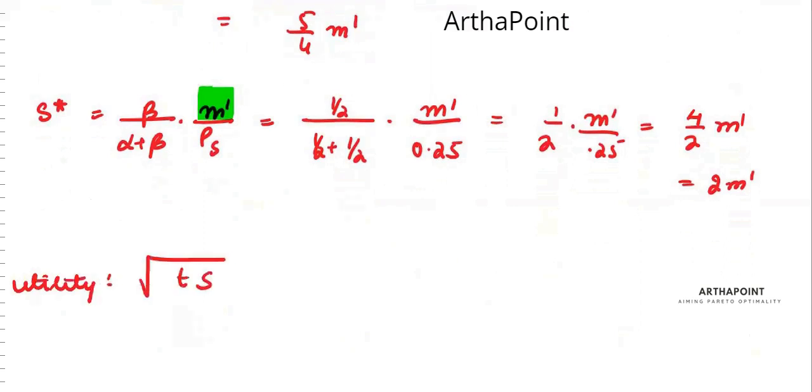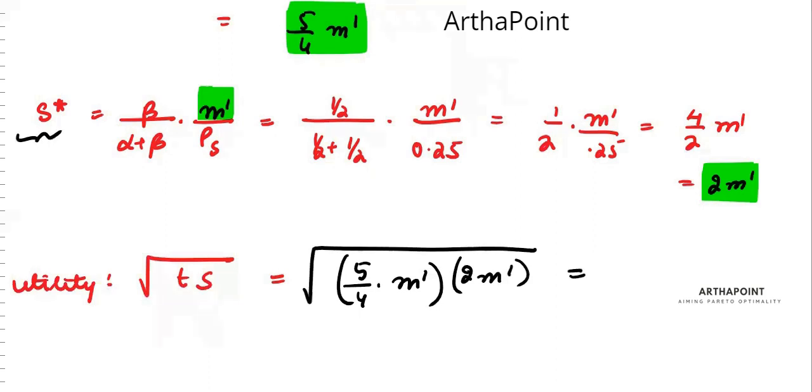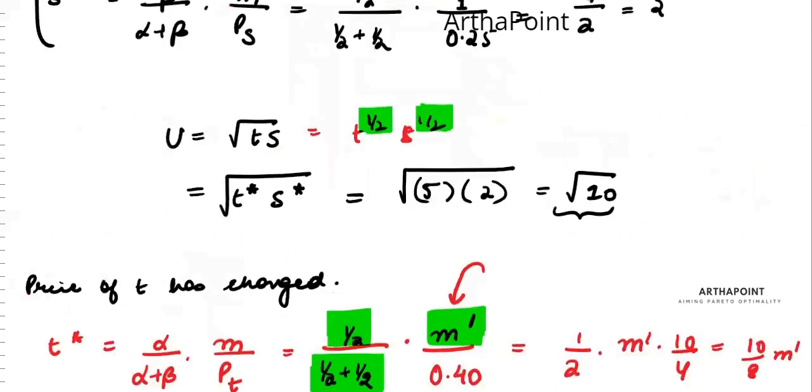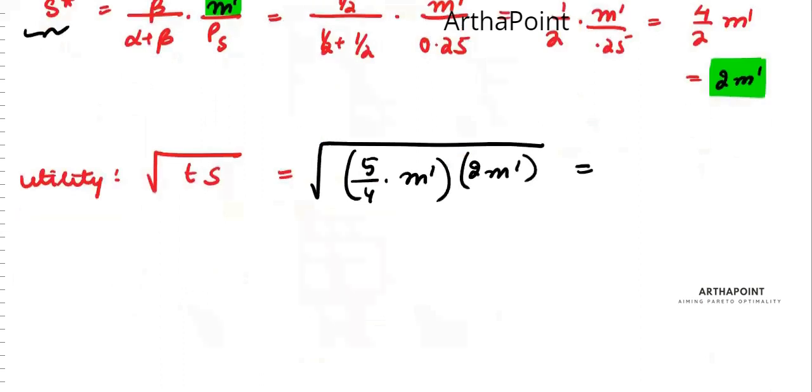Now what is my utility? My utility is given by root ts. So now based on my new income, I am going to go ahead and consume how many units of t? 5 by 4 into m dash units of t. How much s I'm going to consume? 2 m dash. It will be 2 m dash. This is the amount of s that I consume.